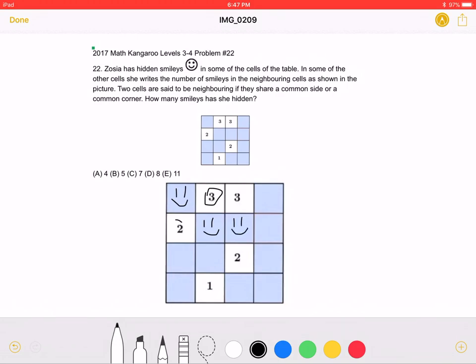Now, let's look at this 2. We don't need to add any more smiley faces because it already has 2 neighboring smiley faces. The same is with this 2 over here. We don't need to add any more smiley faces because it has 2 neighboring smiley faces.